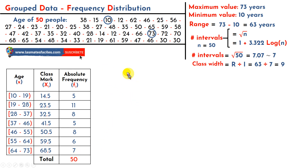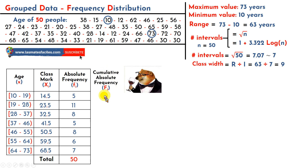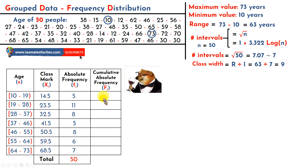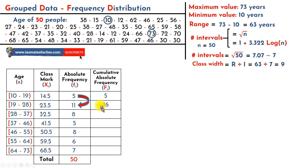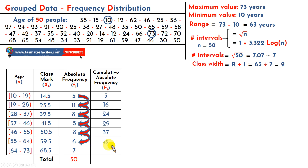Let's move on to the next column: cumulative absolute frequency. It's very easy to calculate — I take 5 and add the next 11, giving a total of 16. If I add 8, I reach 24. Adding 5 gives 29, and continuing like this until the total reaches 50.